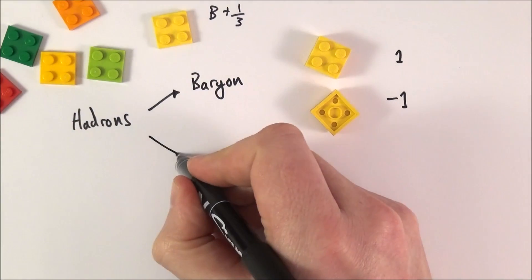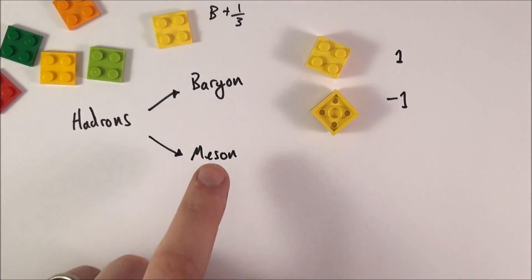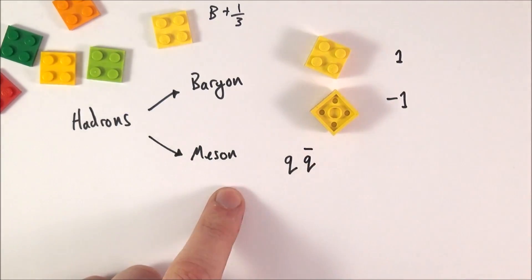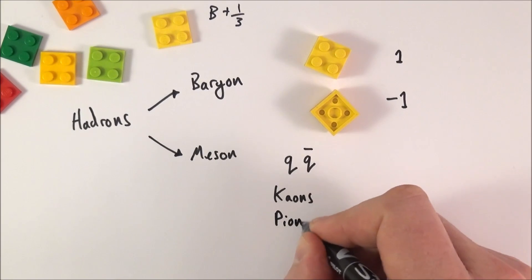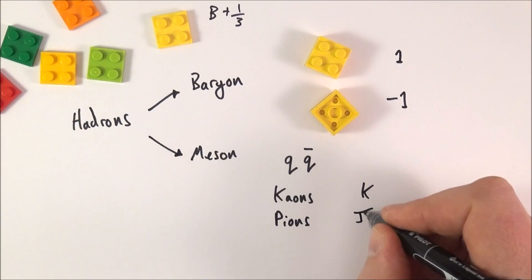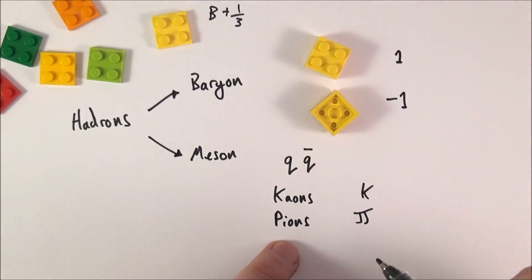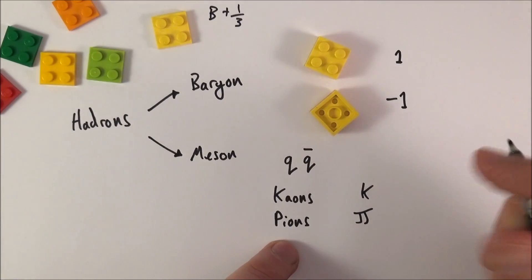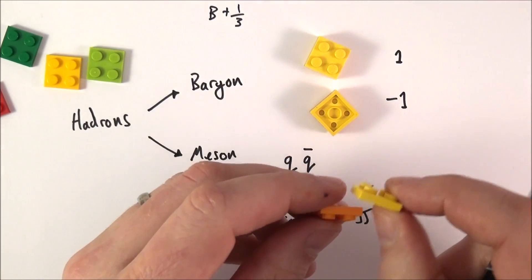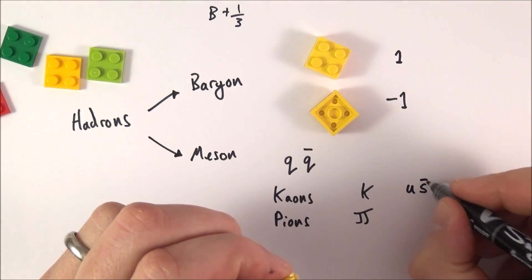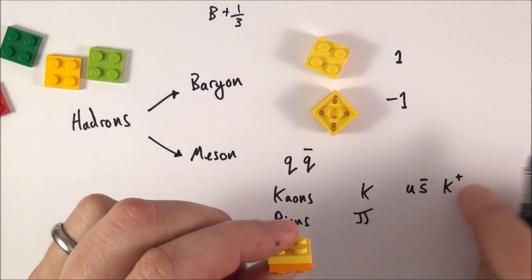We also have particles called mesons. A meson is made out of a quark and an antiquark. Particles you might hear about include kaons (symbol K) and pions (symbol π). For example, a kaon can be made from an up quark and an anti-strange quark, giving a K-plus with a charge of two-thirds plus one-third, which equals plus one.